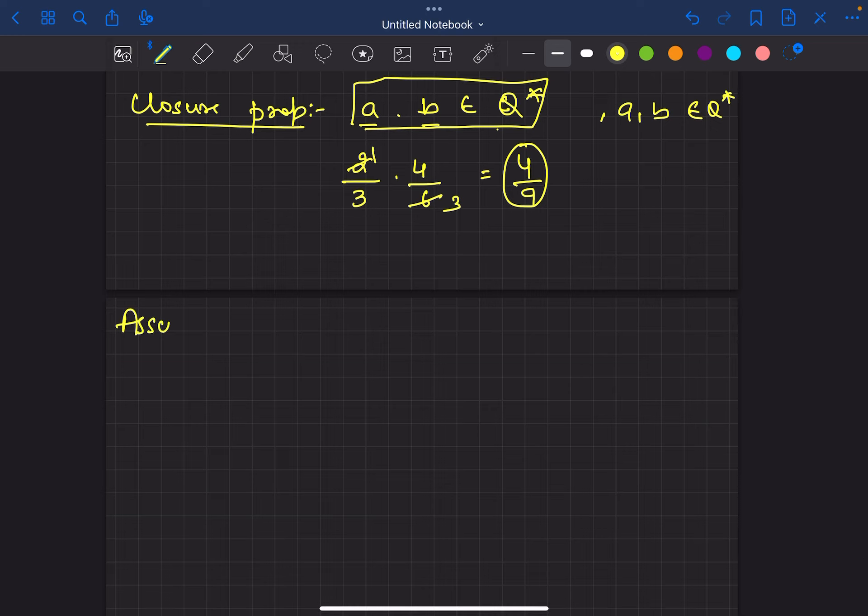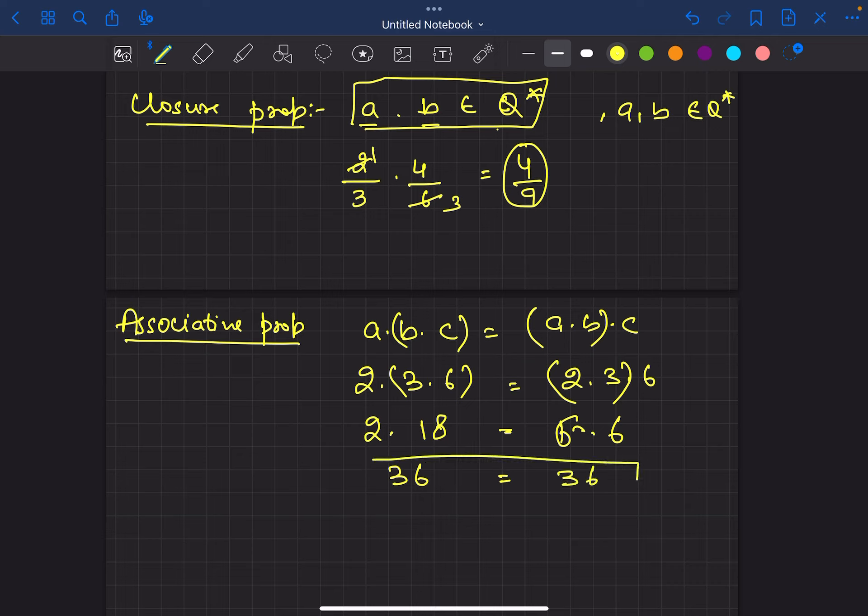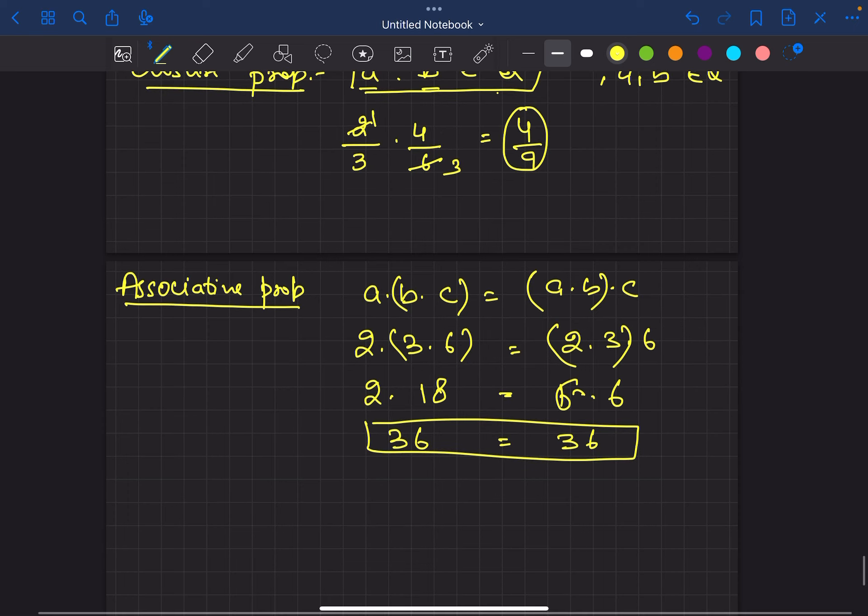Of course, A and B belong to this set. This is a multiplication operation, so closure property is satisfied. Second is associative. What is associative property? A dot B dot C equals A dot B dot C. So 2 dot 3 dot 6 equals 2 dot 3 dot 6. They belong to this set.